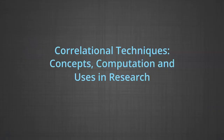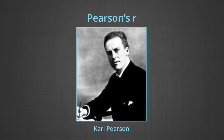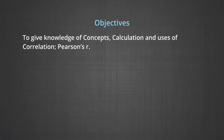This module is concerned with correlation techniques. We are going to discuss concepts, computation and uses in research, and we are going to discuss Pearson's R. The objectives of this module are to give knowledge of: the concept of correlation, calculation of Pearson's R, uses of correlation, correlation and causation, and quick interpretation of R.